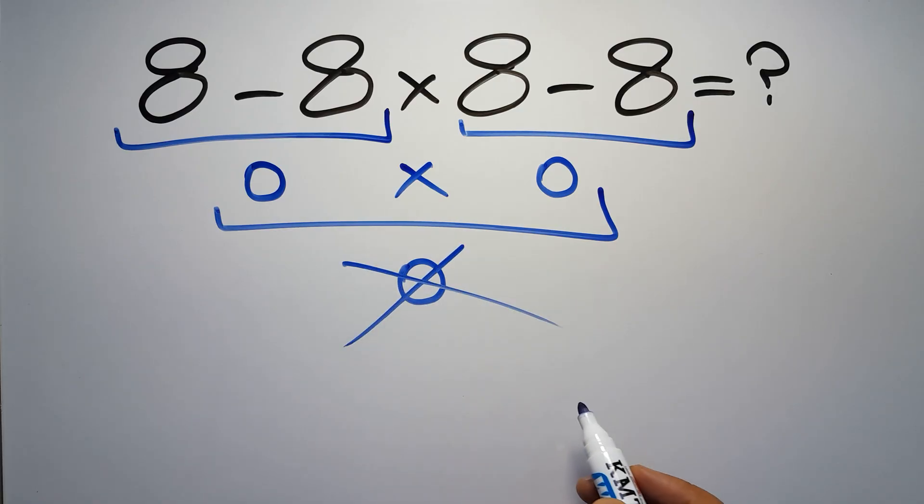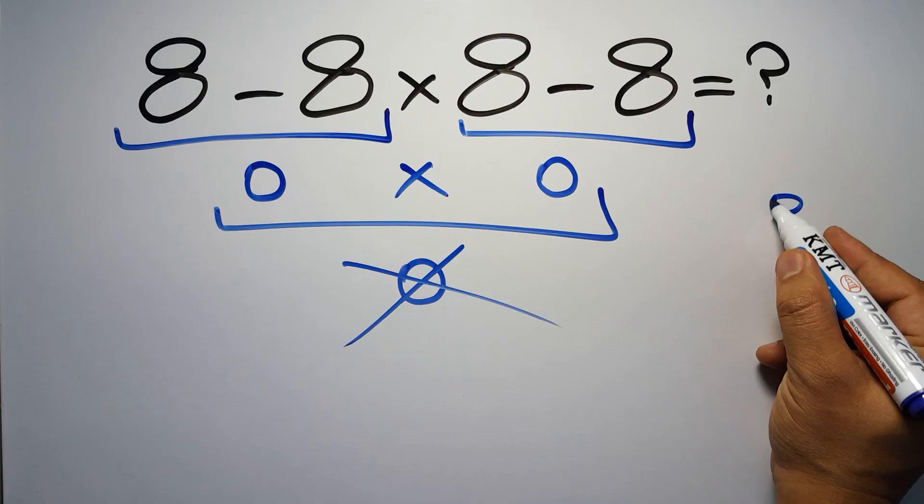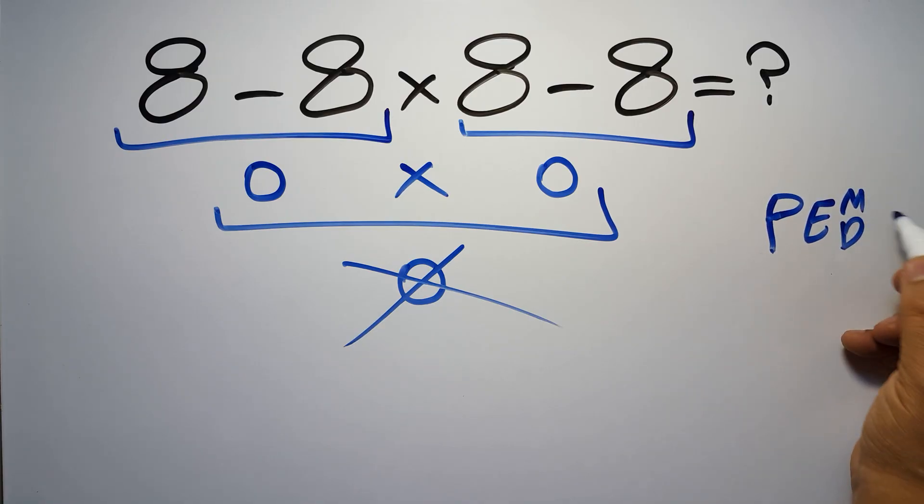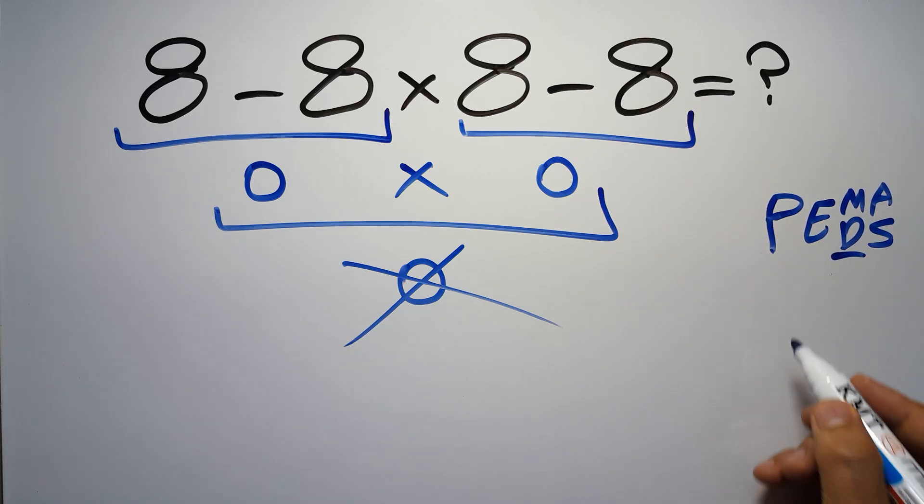But this answer is not correct because according to the order of operations, first we have to do parentheses, then exponents, then multiplication or division, and finally addition or subtraction.